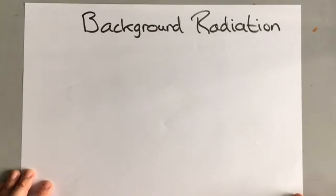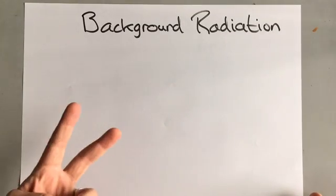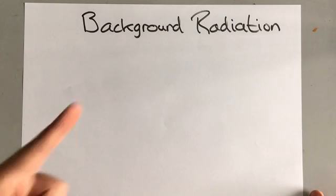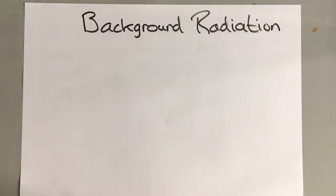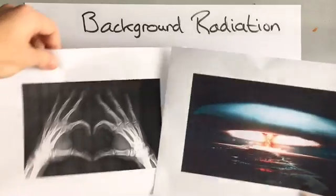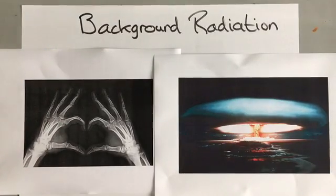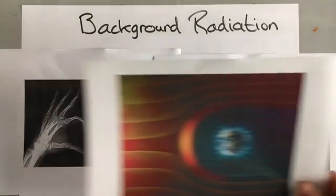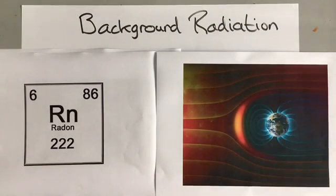So in summary, there are two different types of background radiation. There are man-made sources of background radiation, such as X-rays or nuclear weapons testing or nuclear disasters. And there are natural sources of background radiation, such as cosmic rays and radon gas.